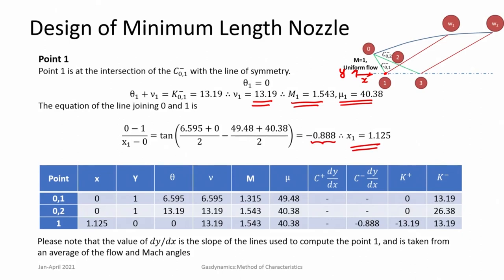We write the value for point 1: x is known, y is 0, theta is 0, ν is 13.19. The corresponding Mach number and mu are also recorded along with the slope values used to get x and y. k-plus and k-minus can be determined again here: k-plus is theta minus ν, which is −13.19 (theta is 0, ν is 13.19). Now we go from point 0.1 to point 0.2.